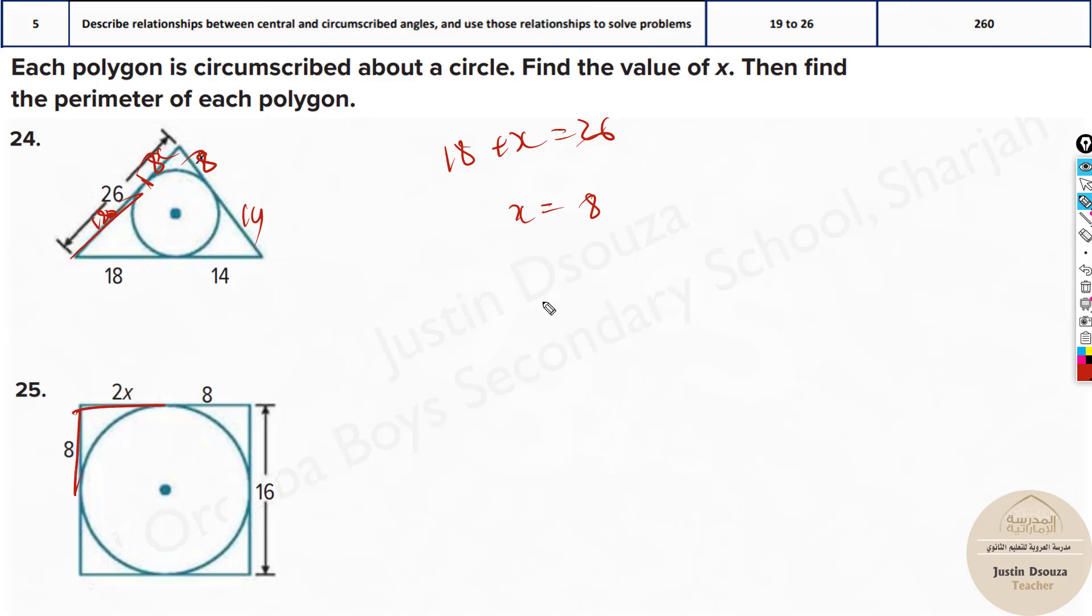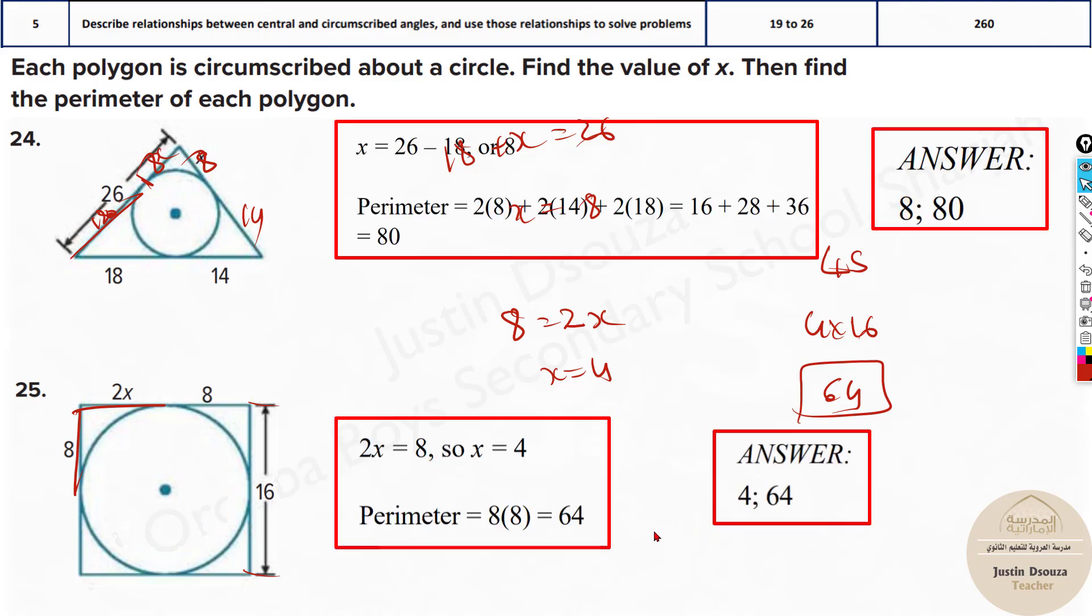Same thing over here. This much is 8 and this is 2x. So 8 equals 2x. So x equals 4. And then we know the entire side is 16 here. And this is also 16. Here, we know this is a square, right? So you can use the square perimeter formula. It's 4 times side. 4 times 16. It will be 64. So this is the perimeter. You can use the formula or you can add them all up. That's also fine.